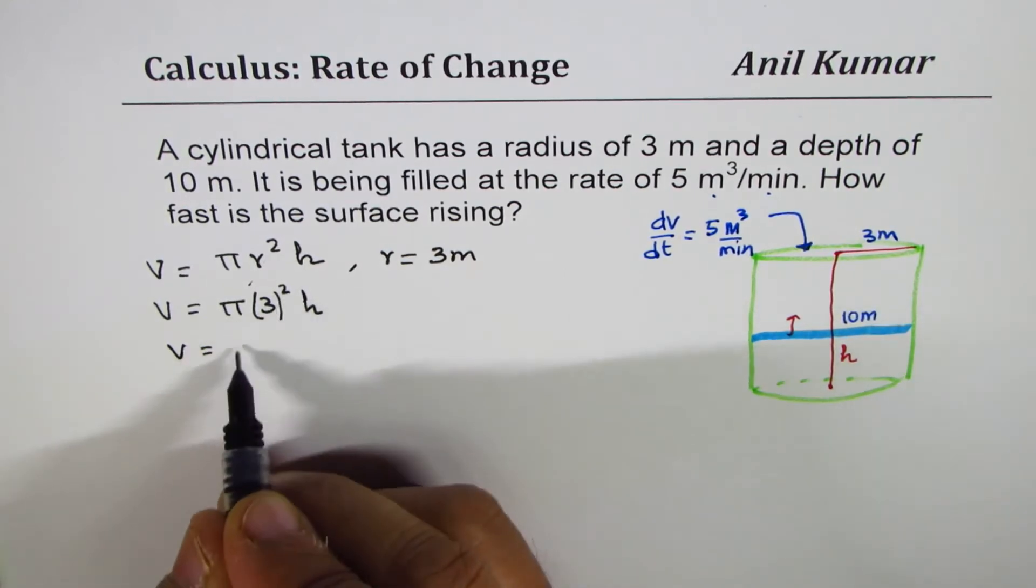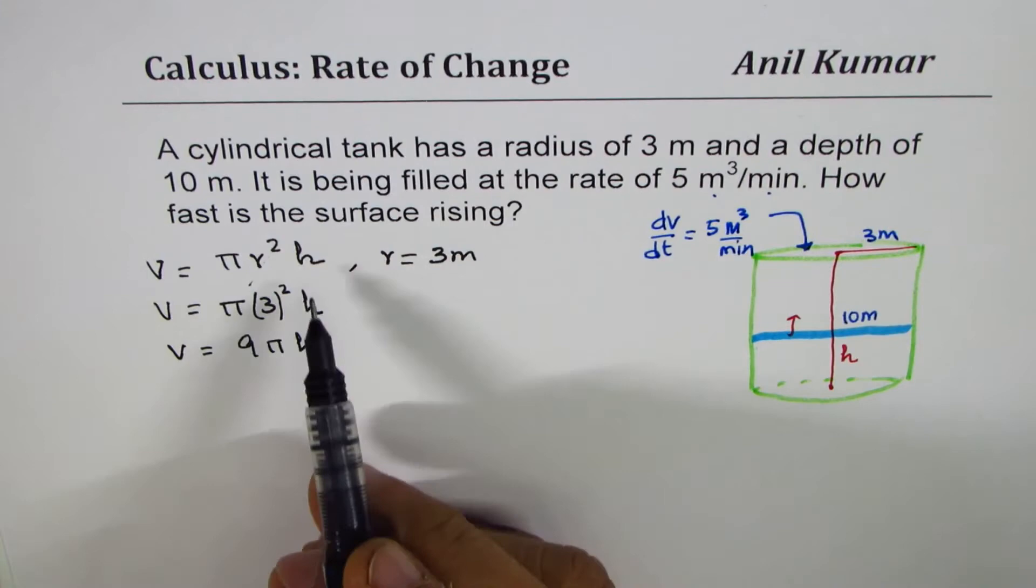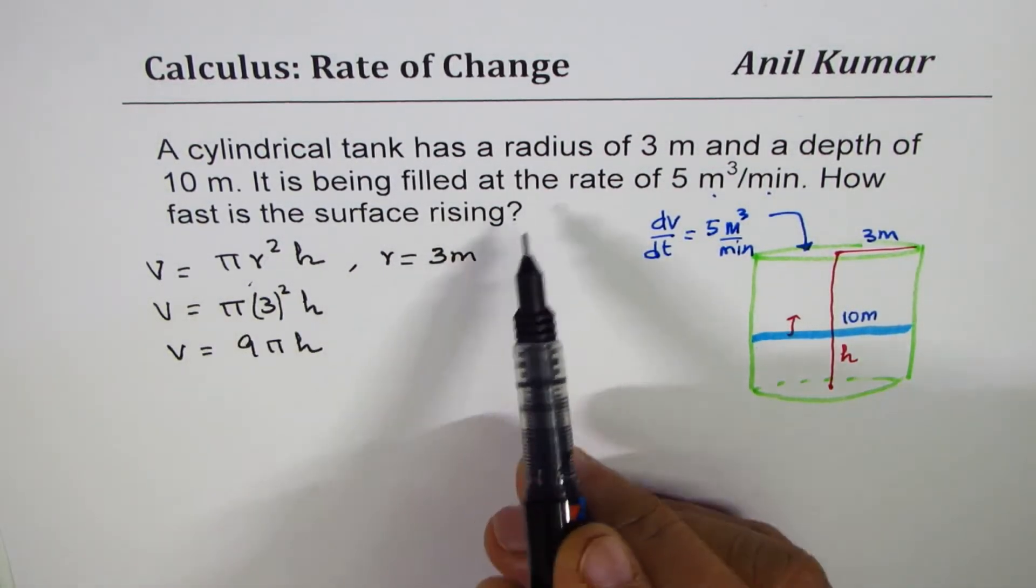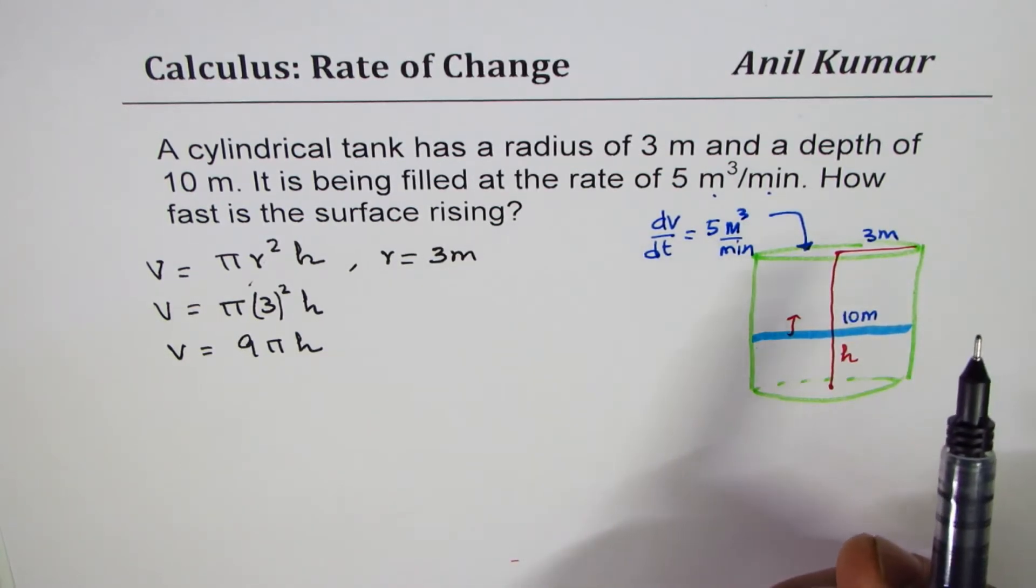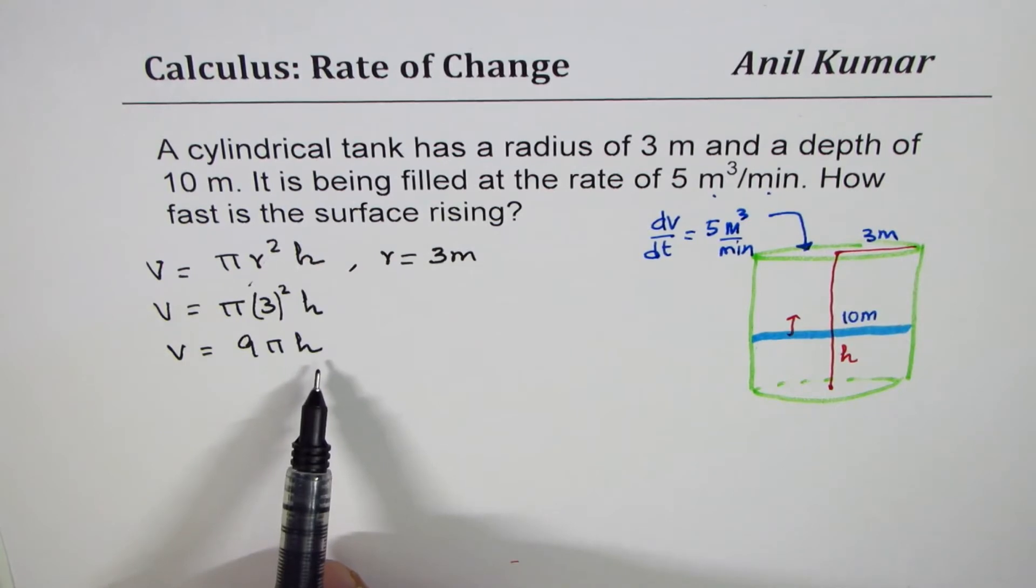We can write this as 9πh. That simplifies, and that is the reason why we are not saying how fast is the surface rising when the height is whatever. That's a very simple equation to work with.